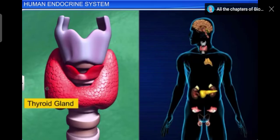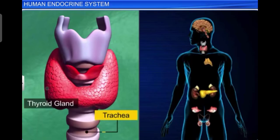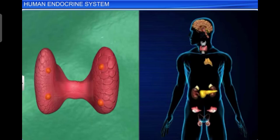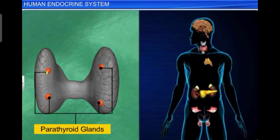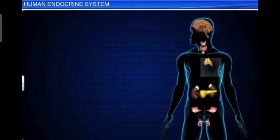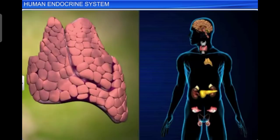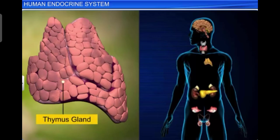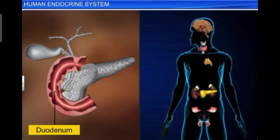The neck has the largest endocrine gland of the body called the thyroid gland. It is composed of two lobes located on either side of the upper part of the trachea. In humans, four parathyroid glands are present on the back side of the thyroid gland. The thymus gland is a lobular structure located between the lungs, behind the sternum, on the ventral side of the aorta, just above the heart.